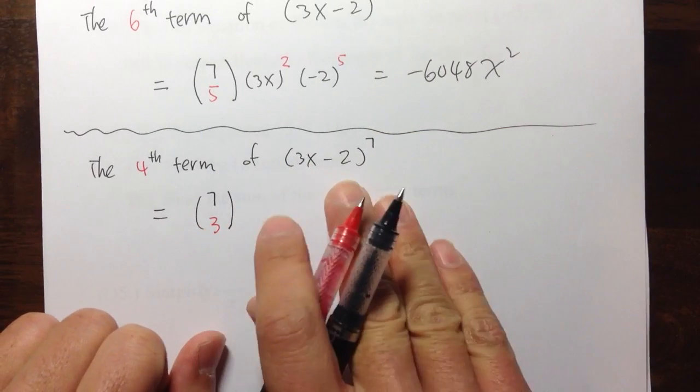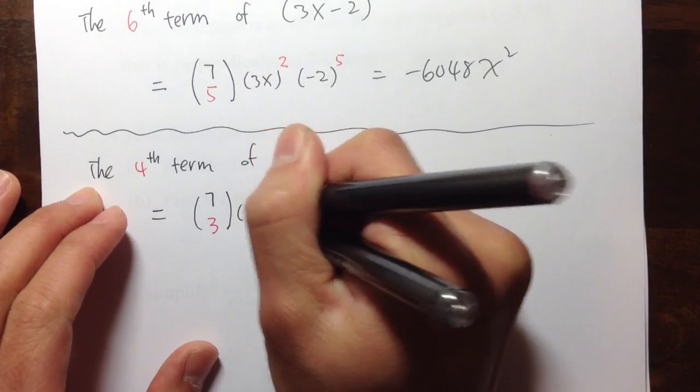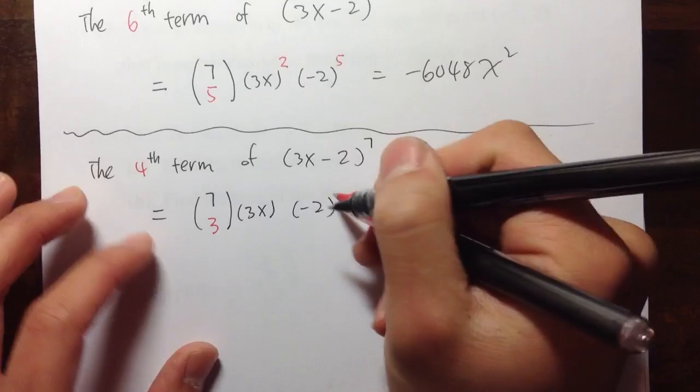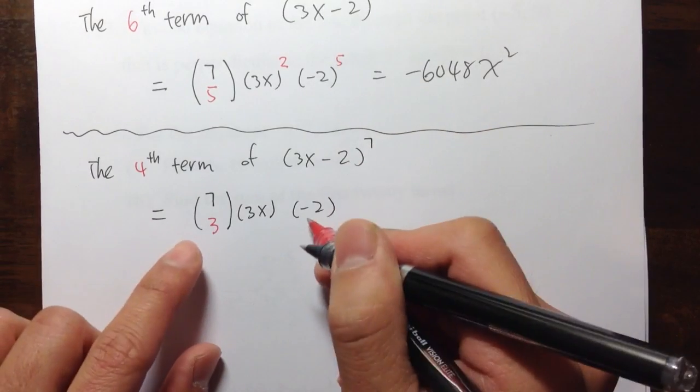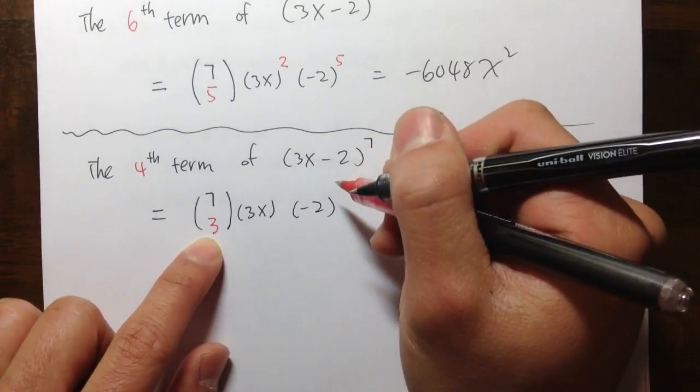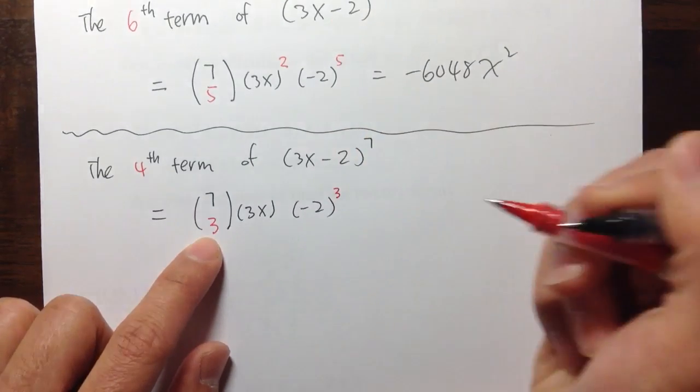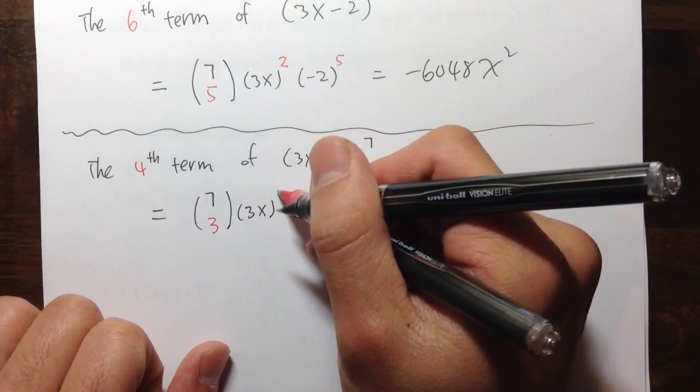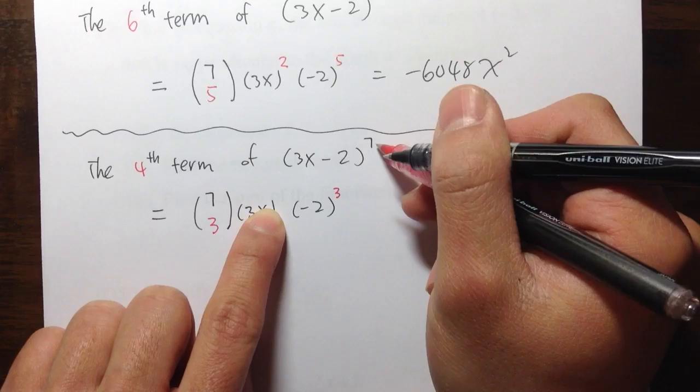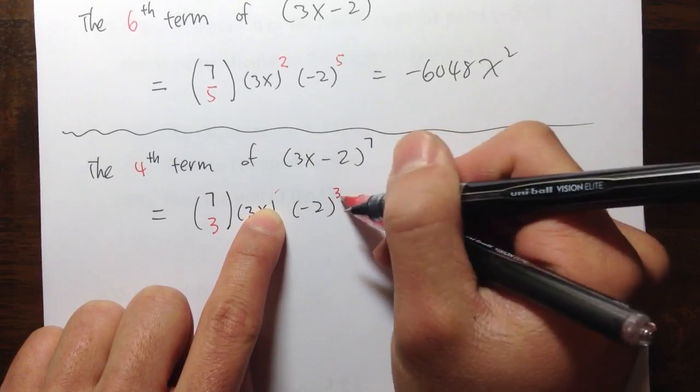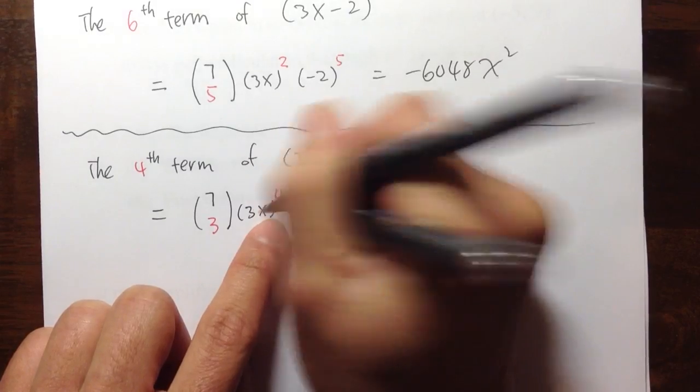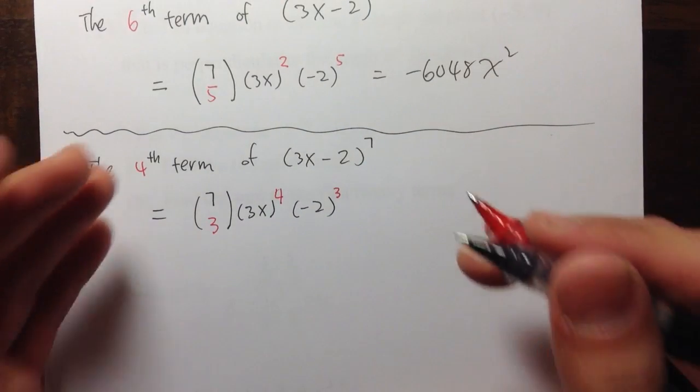And then look at 3x and the negative 2. Let me put the 3x in parentheses. And also the negative 2 in parentheses. Start off with the exponent of the second term, which is the negative 2. This exponent has to match with this number, which I have to have the 3. And then, for this exponent here, I already have 3. What plus 3 will be 7? What plus 3 will be 7? 4 plus 3 will be 7. So, I need to have the 4 right there. That's it. That's how you set this up.